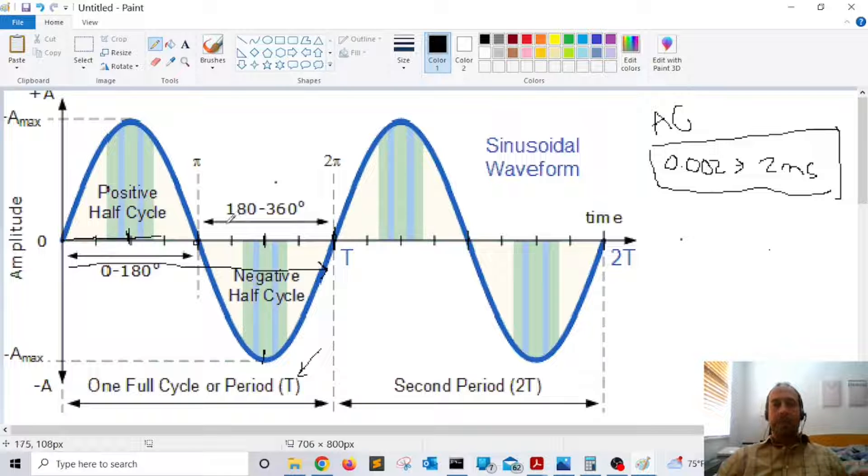So the next thing that we need to do is to calculate how long it takes for this signal to complete one cycle. In other words, we need to calculate the period of the signal. So what we're going to do is multiply how many divisions that we have by two milliseconds.